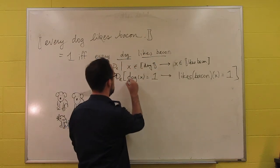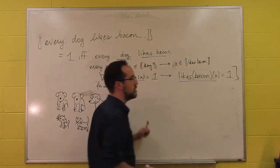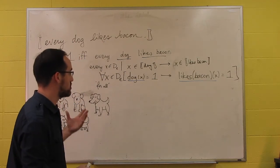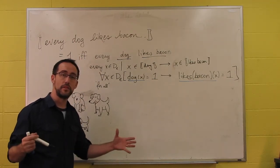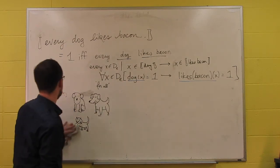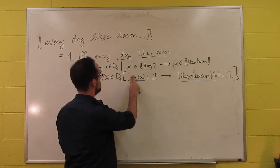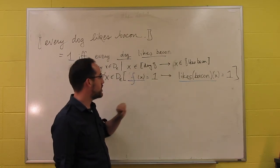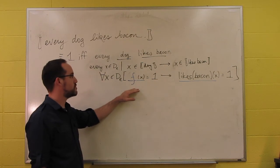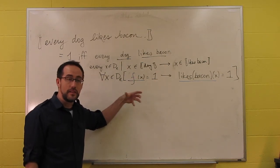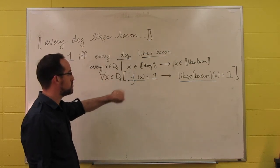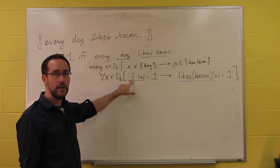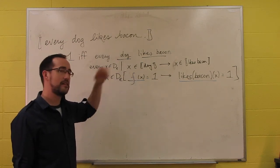Recall that we need two functions. We need the function that gives us the dogs, and we need the function that gives us the liking of bacon, the likers of bacon. I've written f here. The reason is because the meaning of every is going to be the same no matter what. If we have every dog likes bacon, then we get dog here. If we have every marmot likes bacon, then we have marmot instead of dog, and so forth.